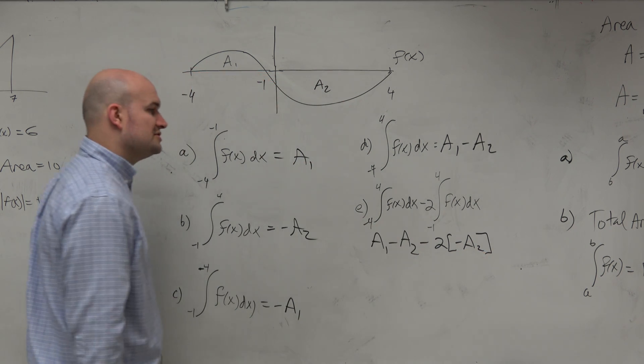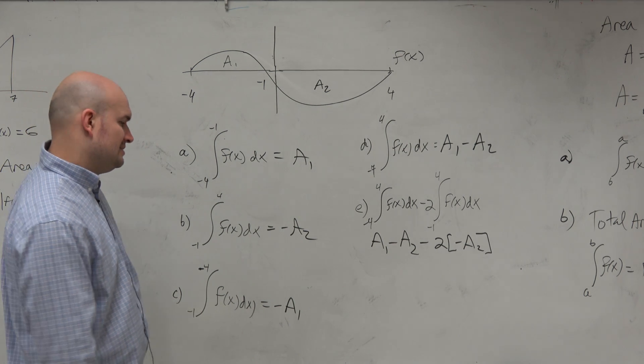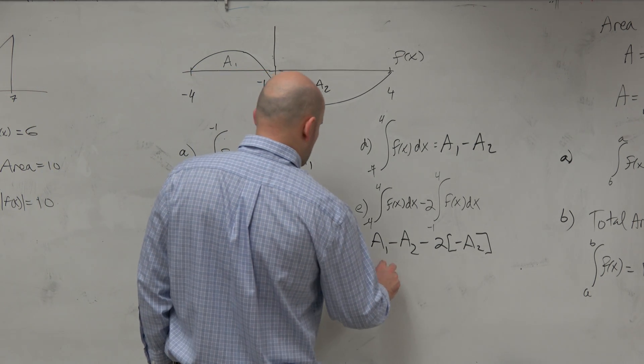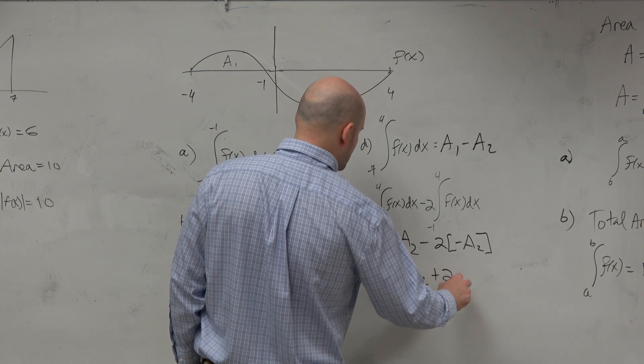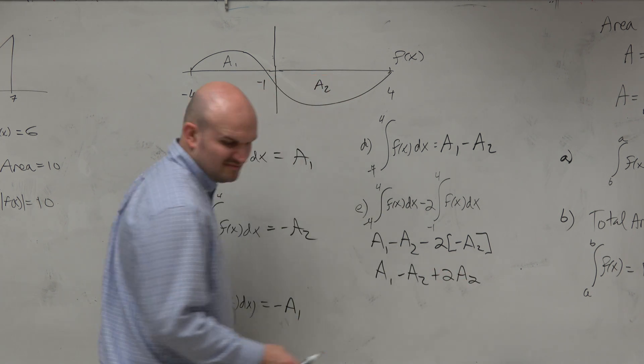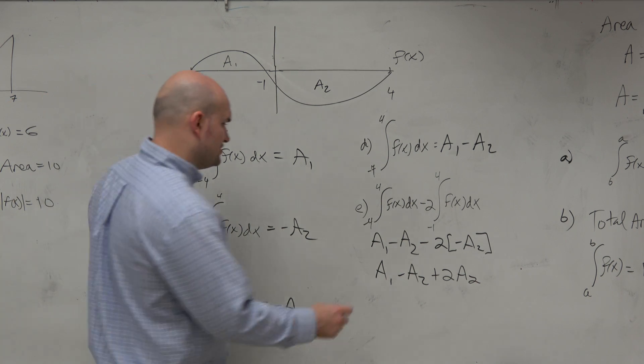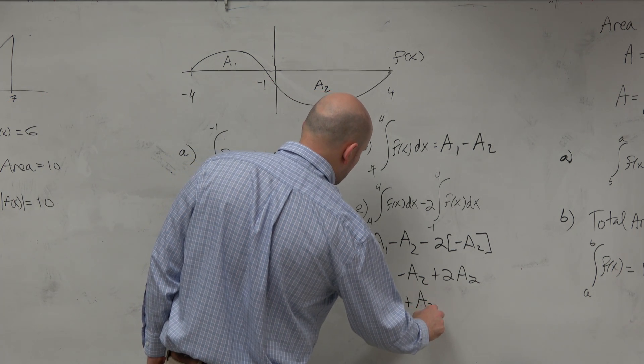So therefore, that turns into a positive. And so therefore, A1 minus A2 plus 2A2, which gives you A1 plus A2. And we're good.